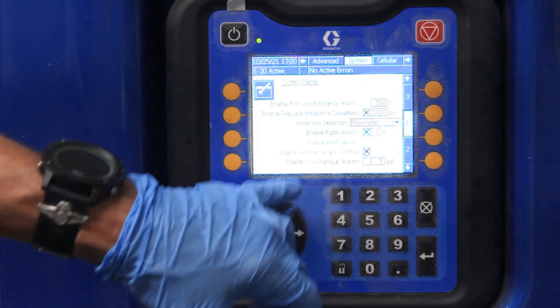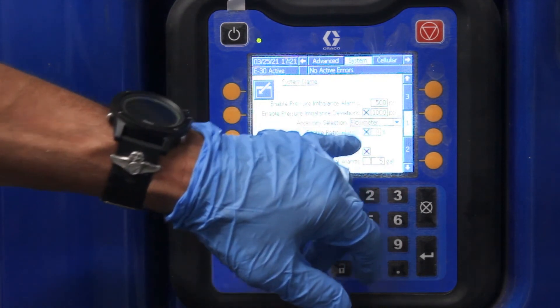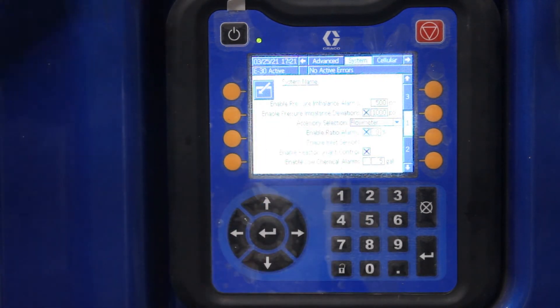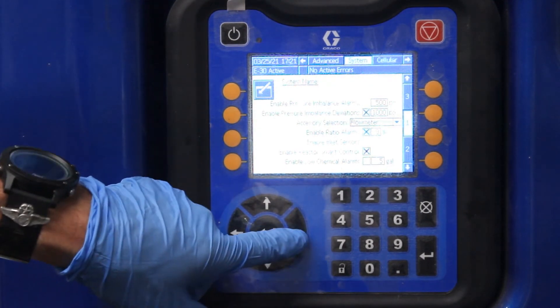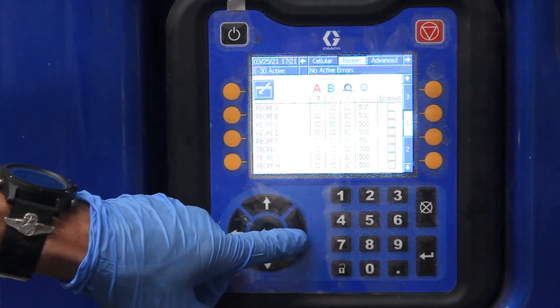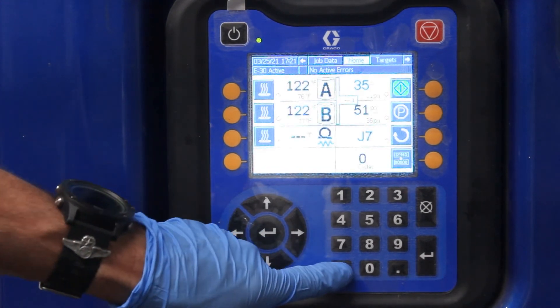First page here, we have accessory section, flow meters. We have flow meters down here. If the machine has that, you have to enable it. Let's see. Go back and lock it.